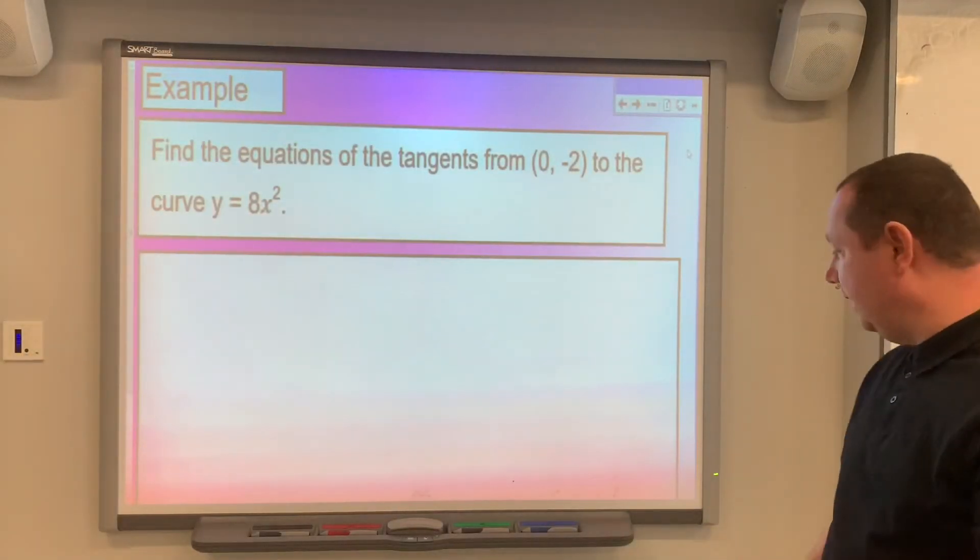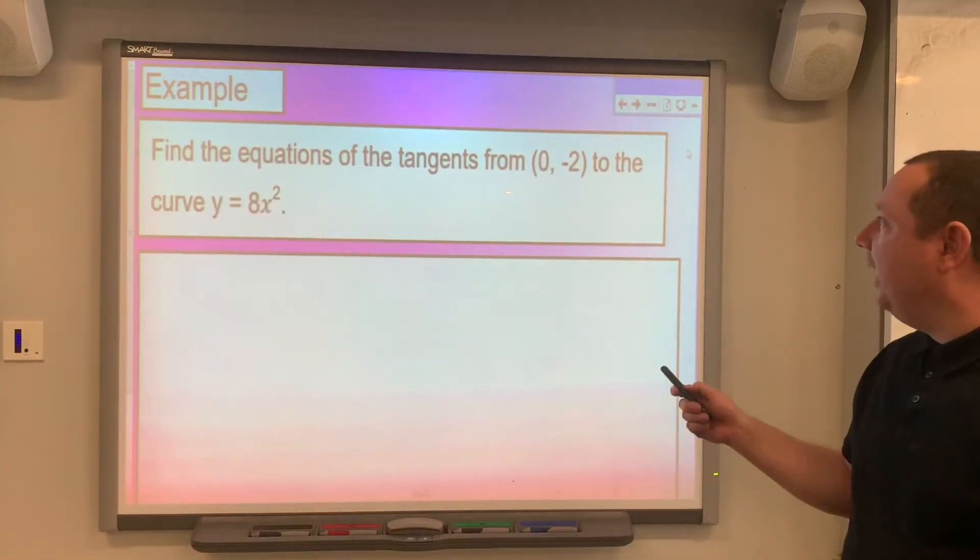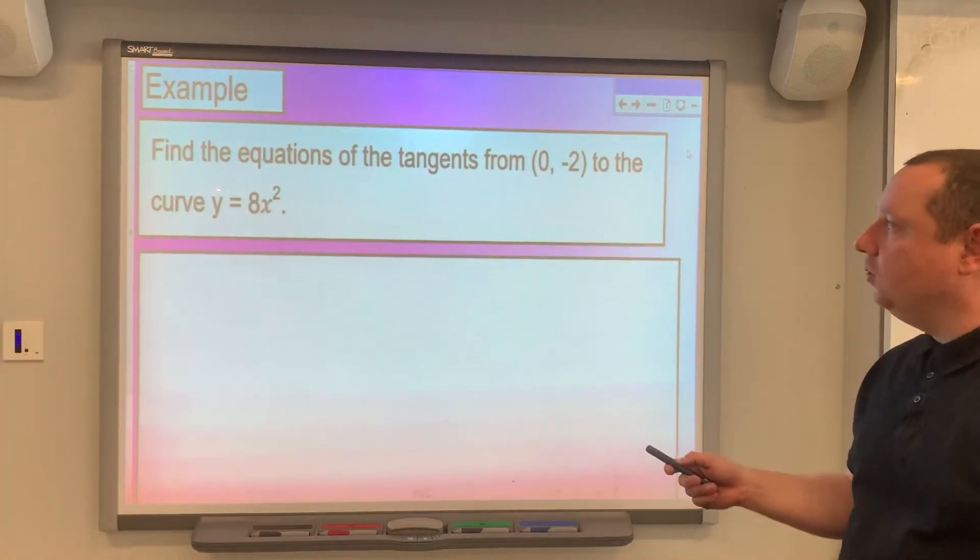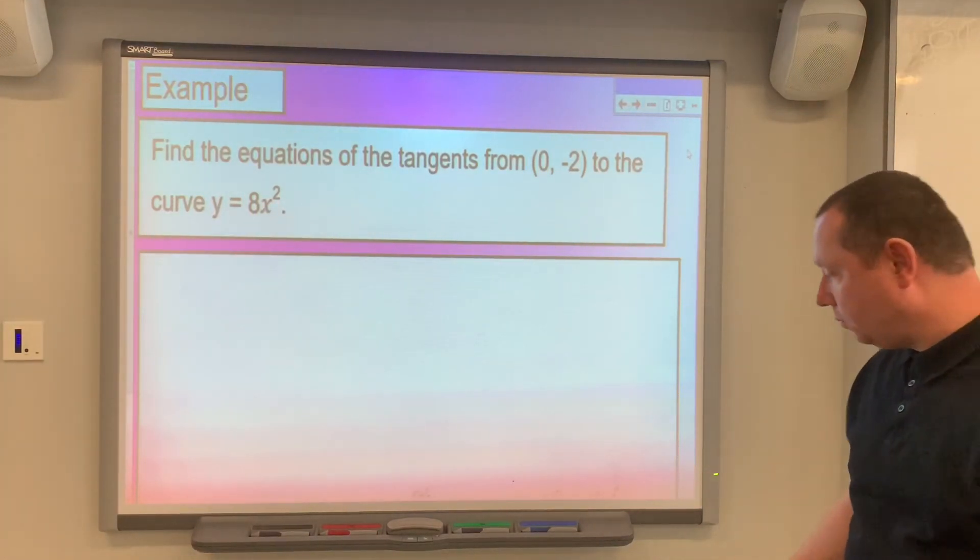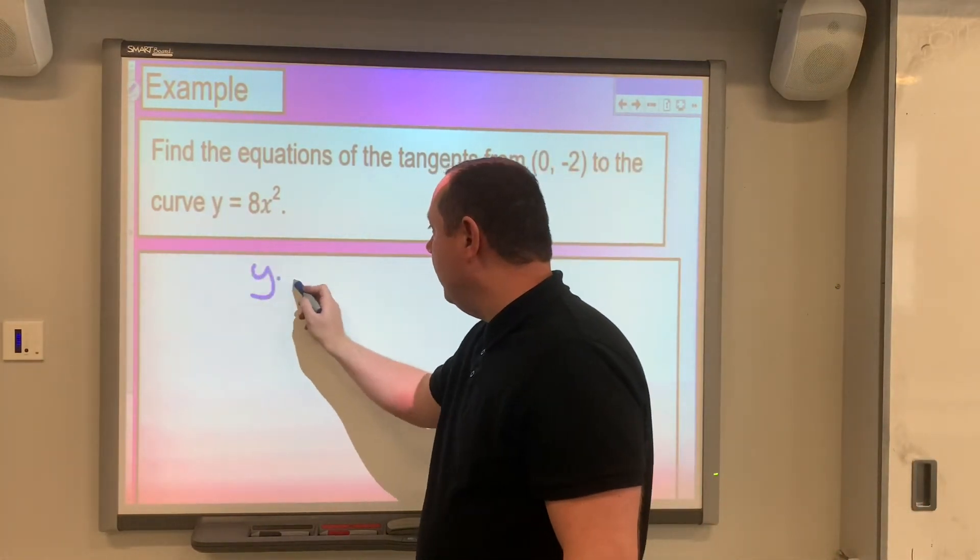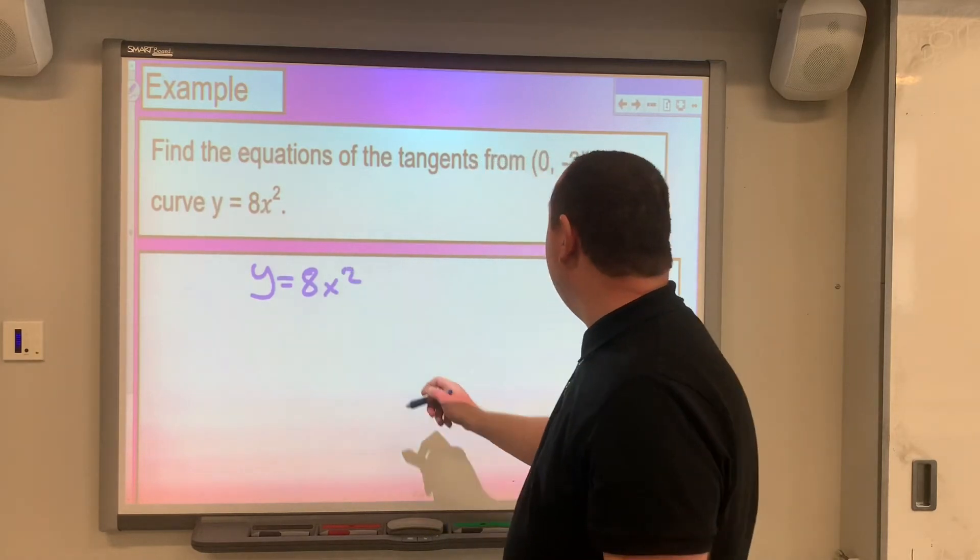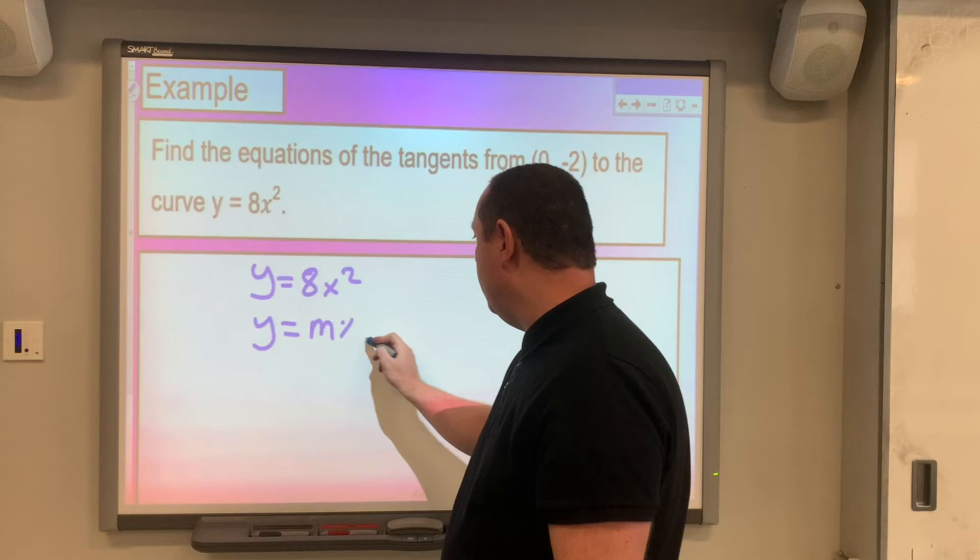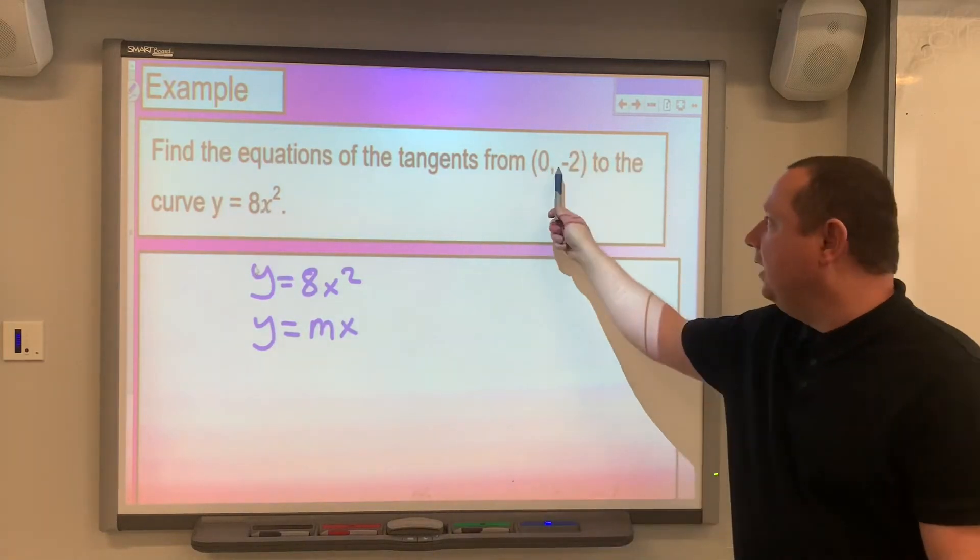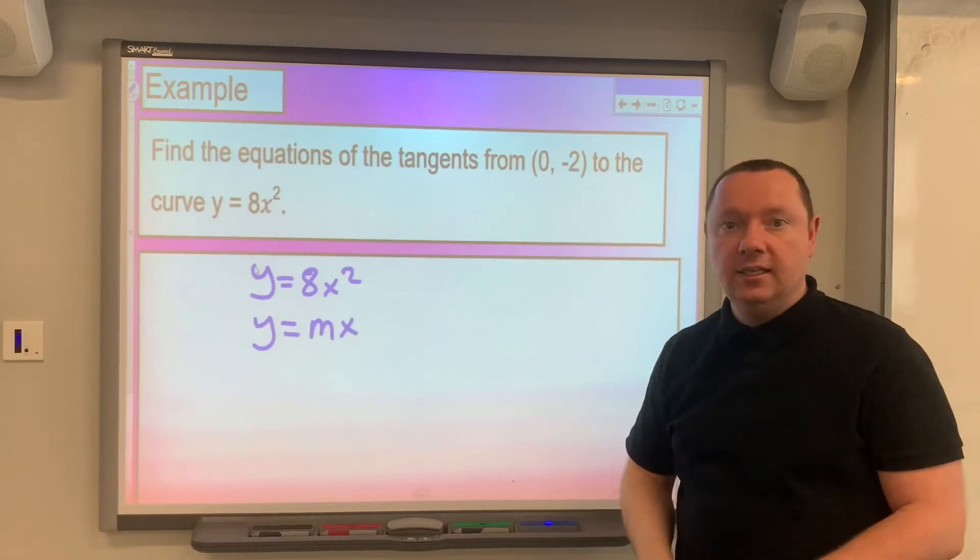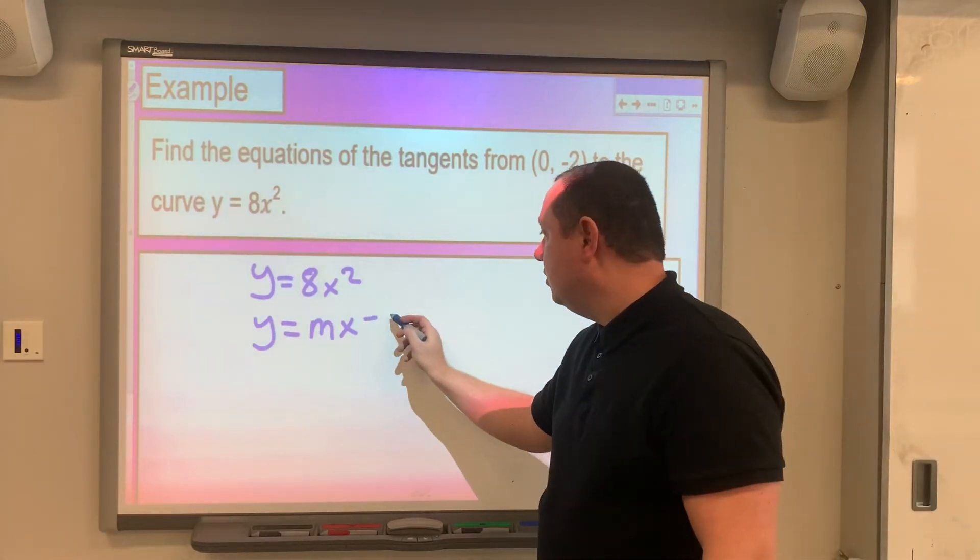Last example: in this one it says find the equation of the tangents from (0, -2) to the curve y equals 8x squared. So again, writing in the information we do have, we've got y equals 8x squared. And we've got y equals mx, we don't know m, plus c. But this time we do know c. It cuts the y-axis at (0, -2), and c is where it cuts the y-axis, so minus 2.